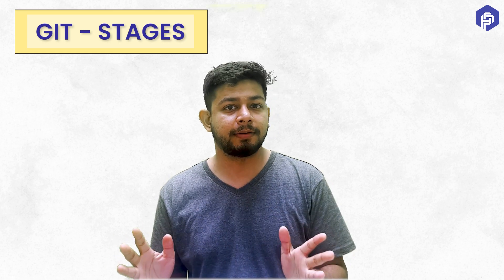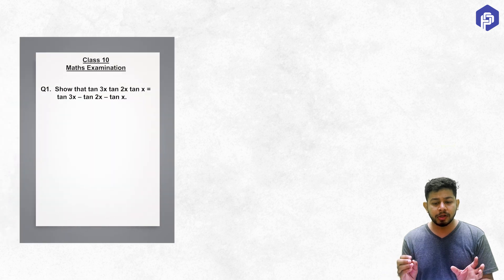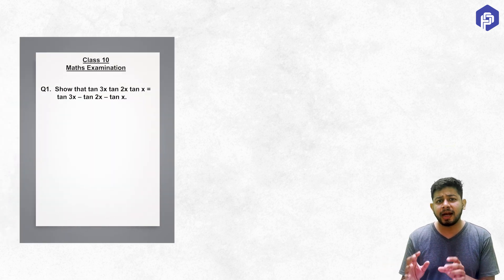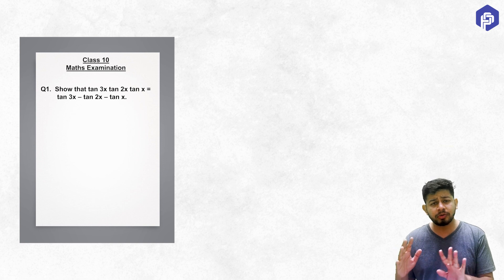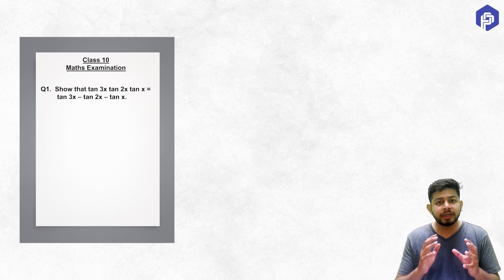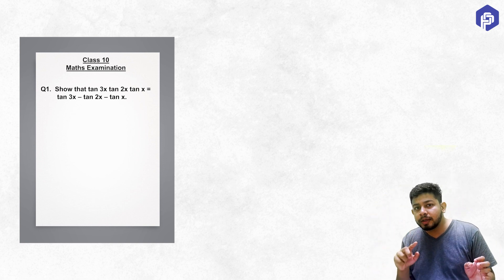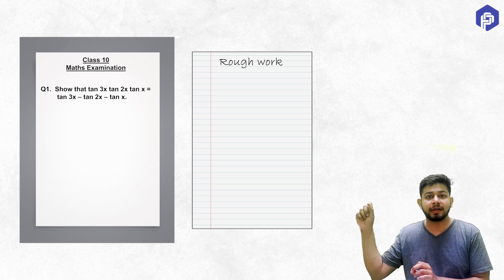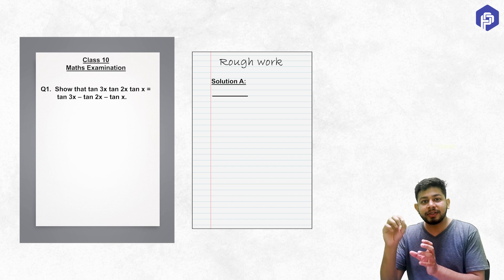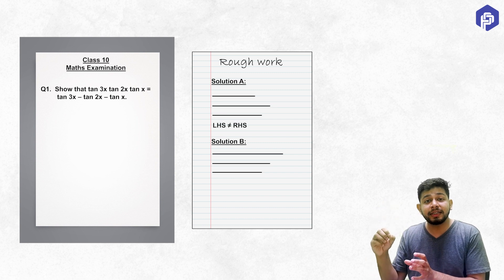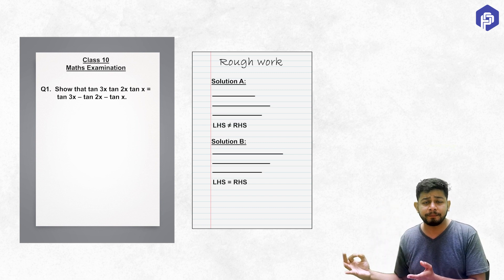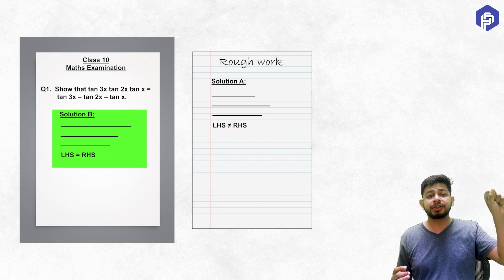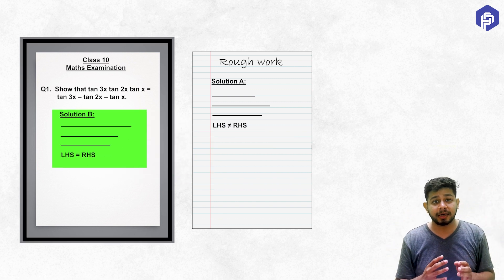Think of it like you are giving your class 10th mathematics exam and you get a question of trigonometry. You think there could be two possible ways to solve it, and only one could give the solution. So what you do is create a new box on the right side of your answer sheet, write 'rough work', solve the question both ways, see which one gives the answer, and then bring that solution to the main area where other answers are written.